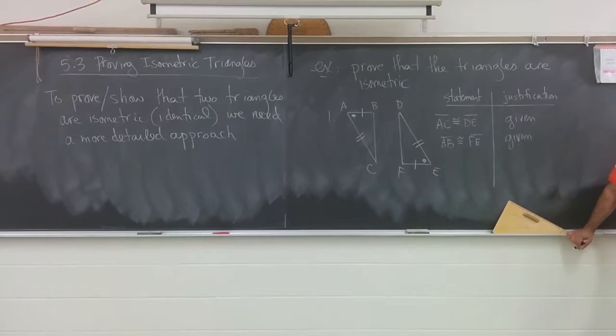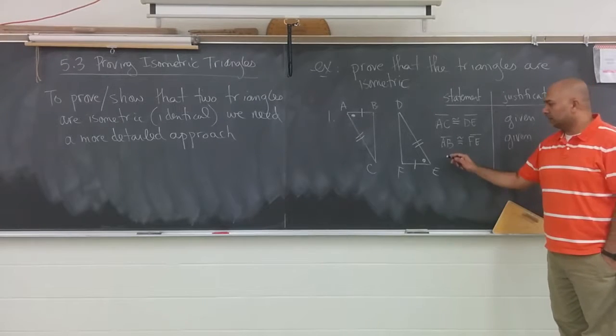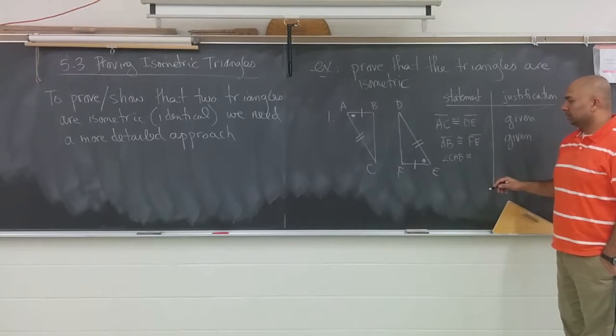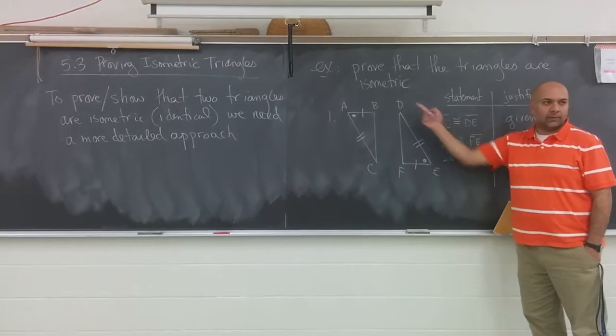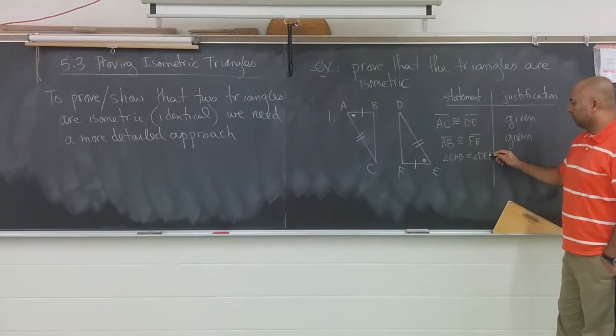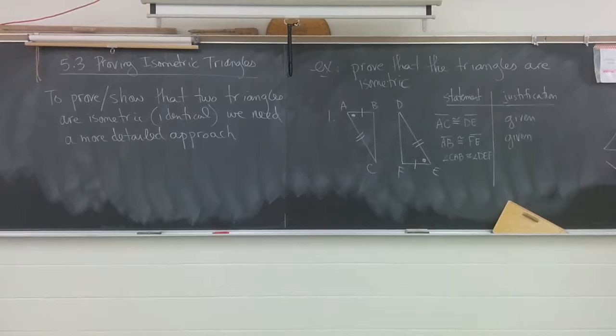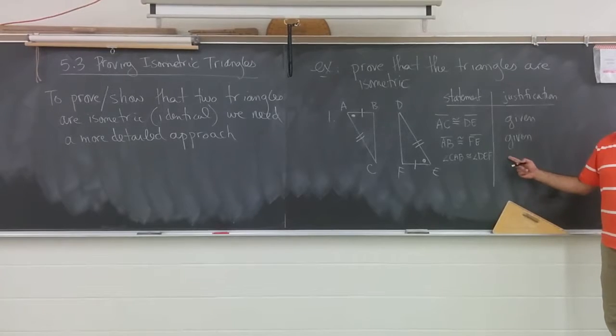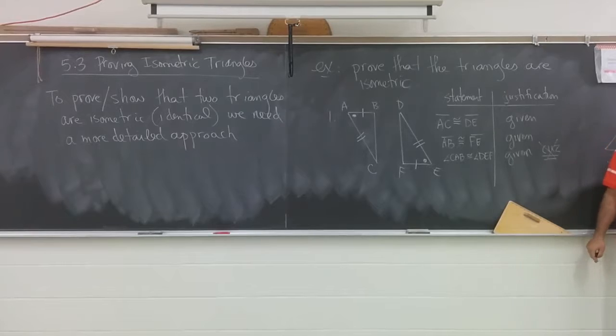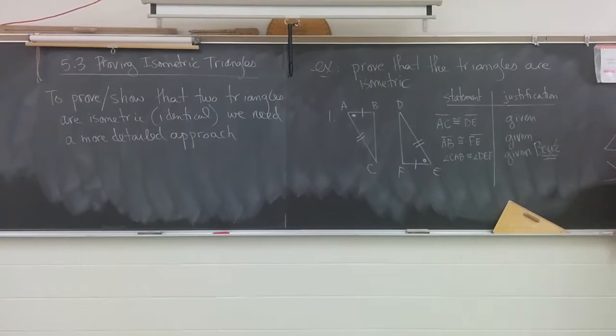We need the last piece of information here, though. What would be their last bit of information? Angle. Angle CAB is congruent to which one? DEF or FED. Remember that we said the angles are reversible. So DEF if you want. Angle DEF. By the way, the angle symbol looks like that. It doesn't look like this. That's wrong. What's your reason? Given. Yeah, don't write 'cuz'. Cuz is not it. Because.